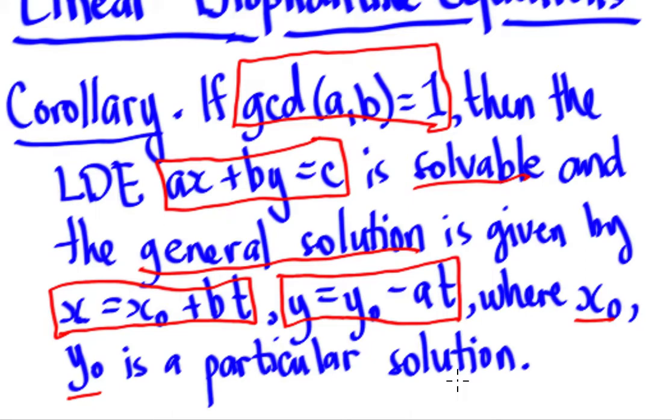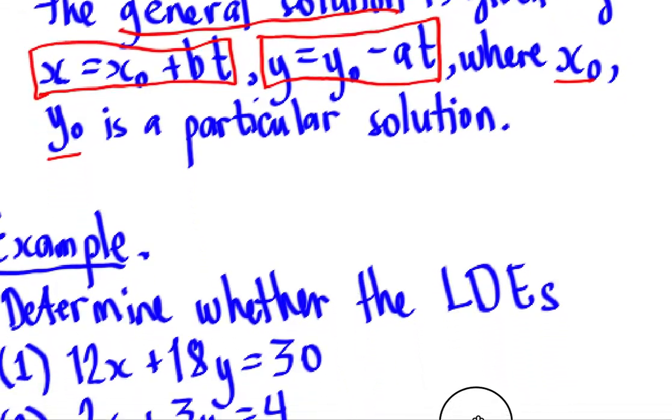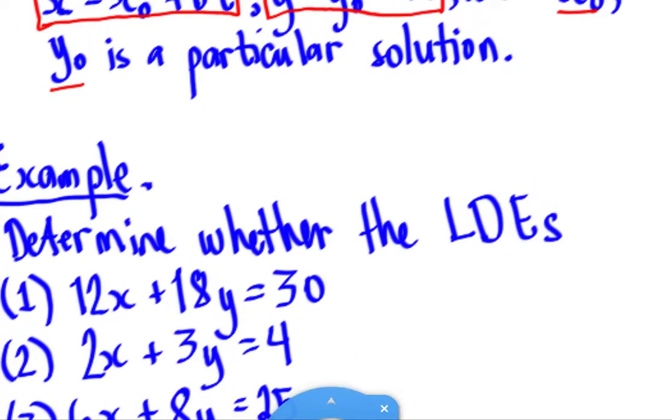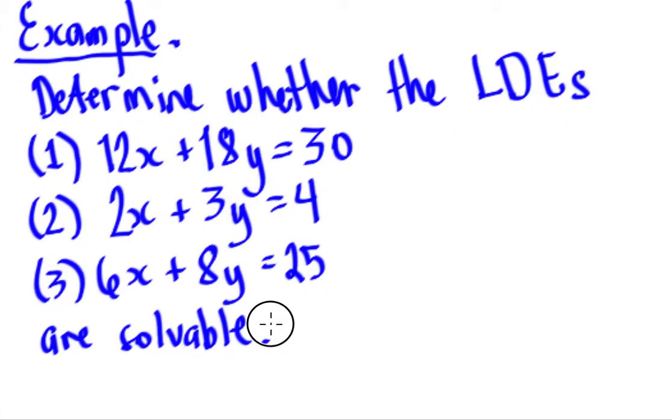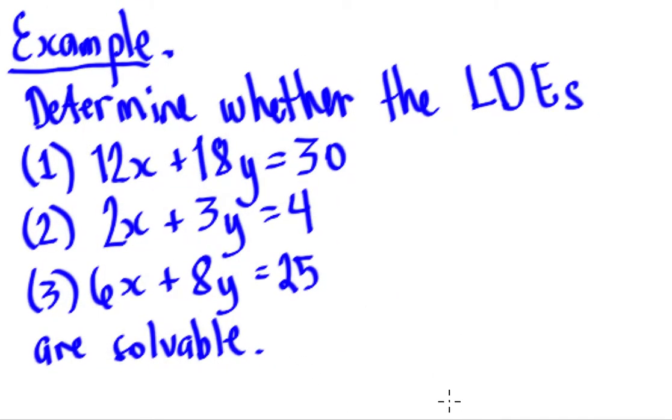To show one set of examples from the second video, the theorem, and then this corollary. What we will show now is an example. This example tells us to determine whether the linear diophantine equations are solvable or not. We're not asked to find some solutions, but we're only asked if it is solvable or not.